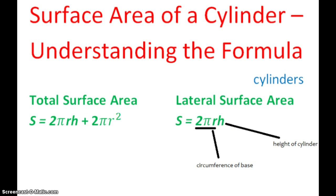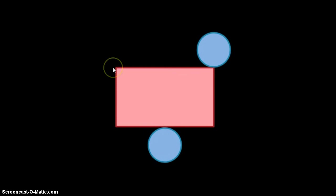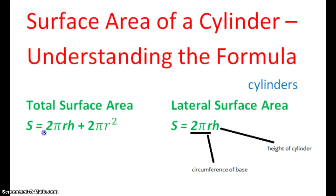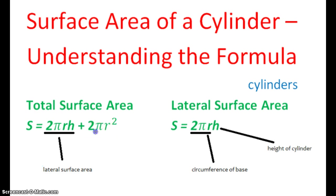Let's go back and talk about total surface area. If I want to find the total surface area, I'm going to have to find the area of my rectangle plus the area of each of the circles. How do you find the area of a circle? Pi r squared — but I have two of them, so I need to multiply that by two. So, 2πr times h I'll call the lateral surface area, because we already have the formula for that. And 2πr squared — remember, πr² is the formula to find the area of a circle.